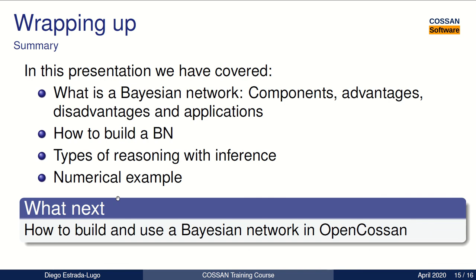So during this video, we just presented what are the Bayesian networks, as well as their components, the advantages, disadvantages, and some applications. We showed how to build a Bayesian network, the types of reasoning that we can do by computing inference, and a numerical example. In our next videos, we're going to show how to build and use a Bayesian network in OpenCOSEN.